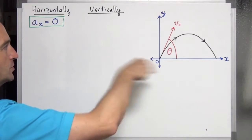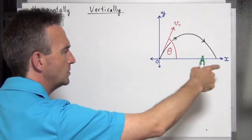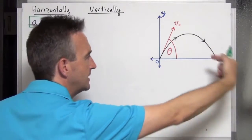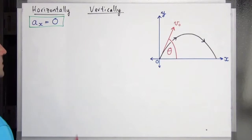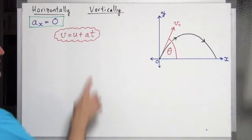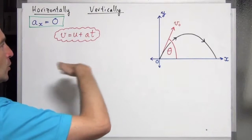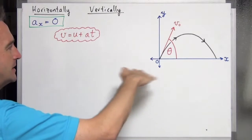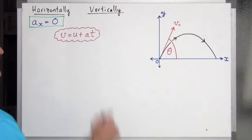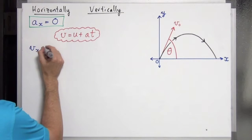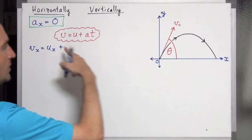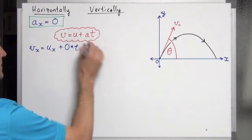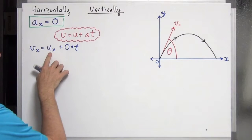The acceleration in the horizontal direction is zero. By the way, the positive horizontal direction is x, the negative is minus x; positive vertical is up, negative vertical is down. To find the velocity in the horizontal direction, we draw on the first SUVAT equation, substituting in horizontal components only. So: vx equals ux plus the horizontal acceleration times time.